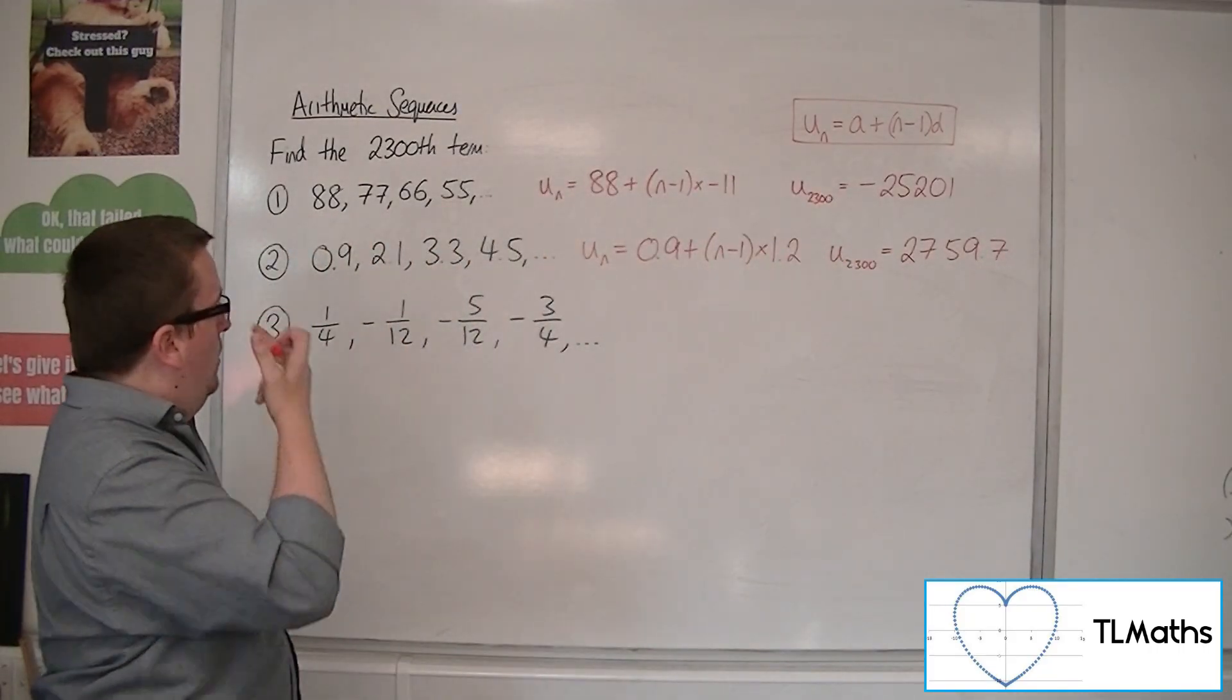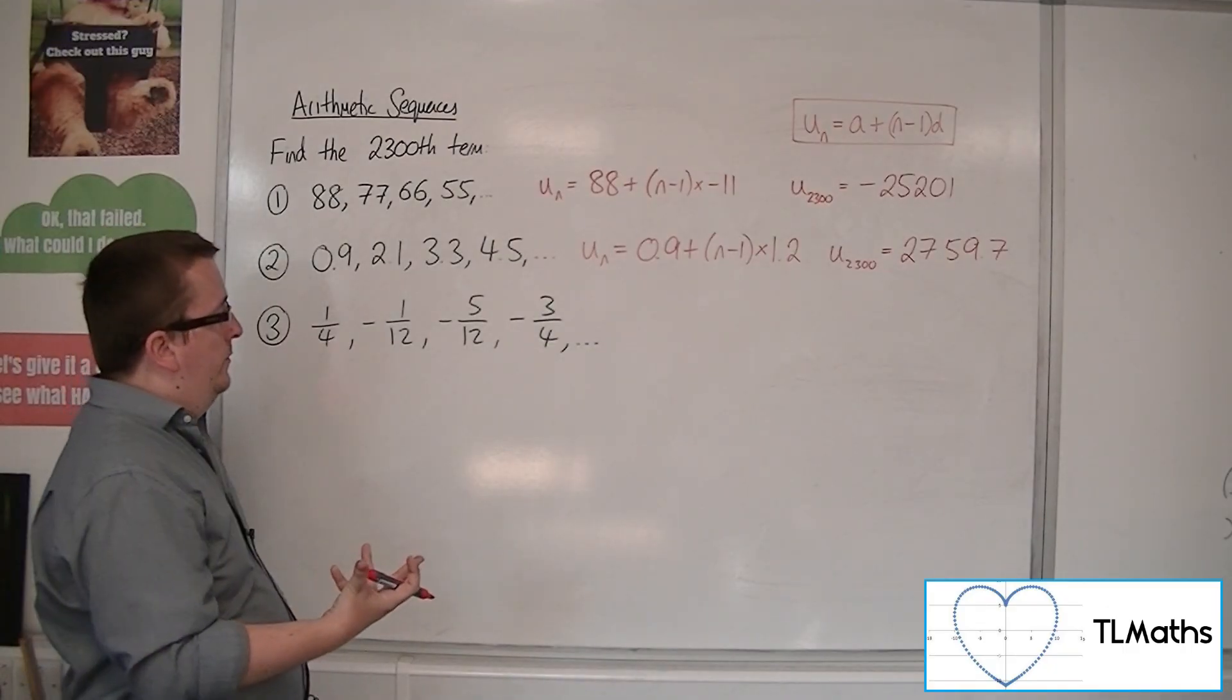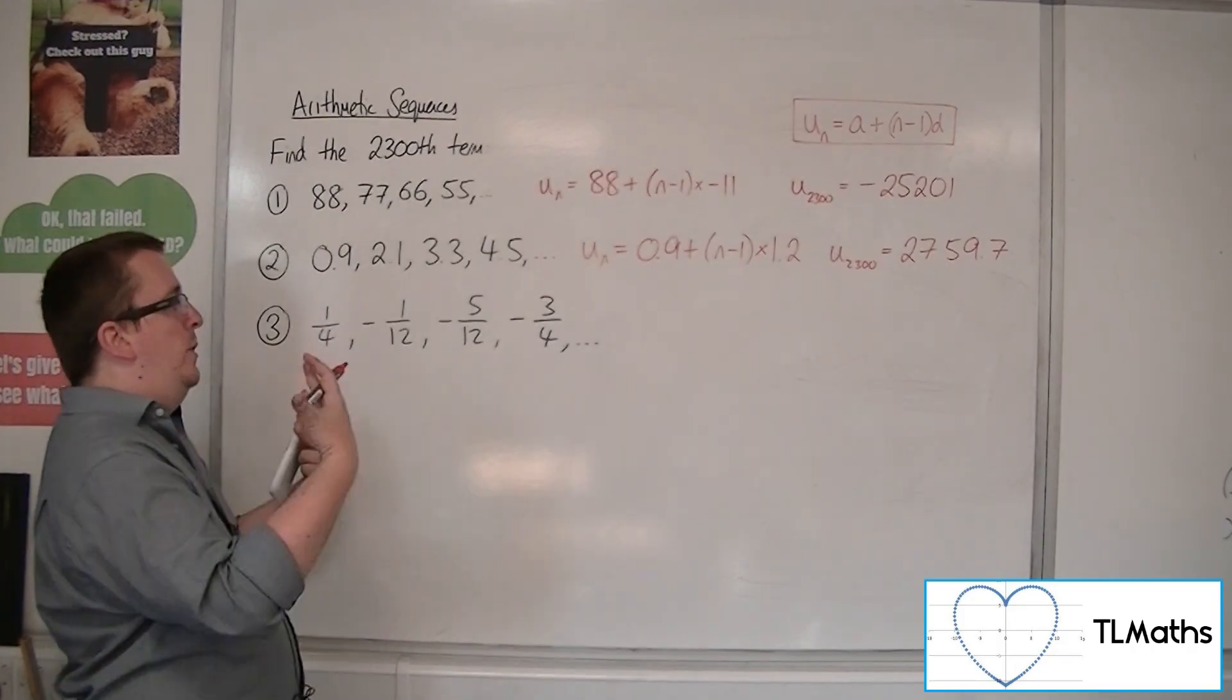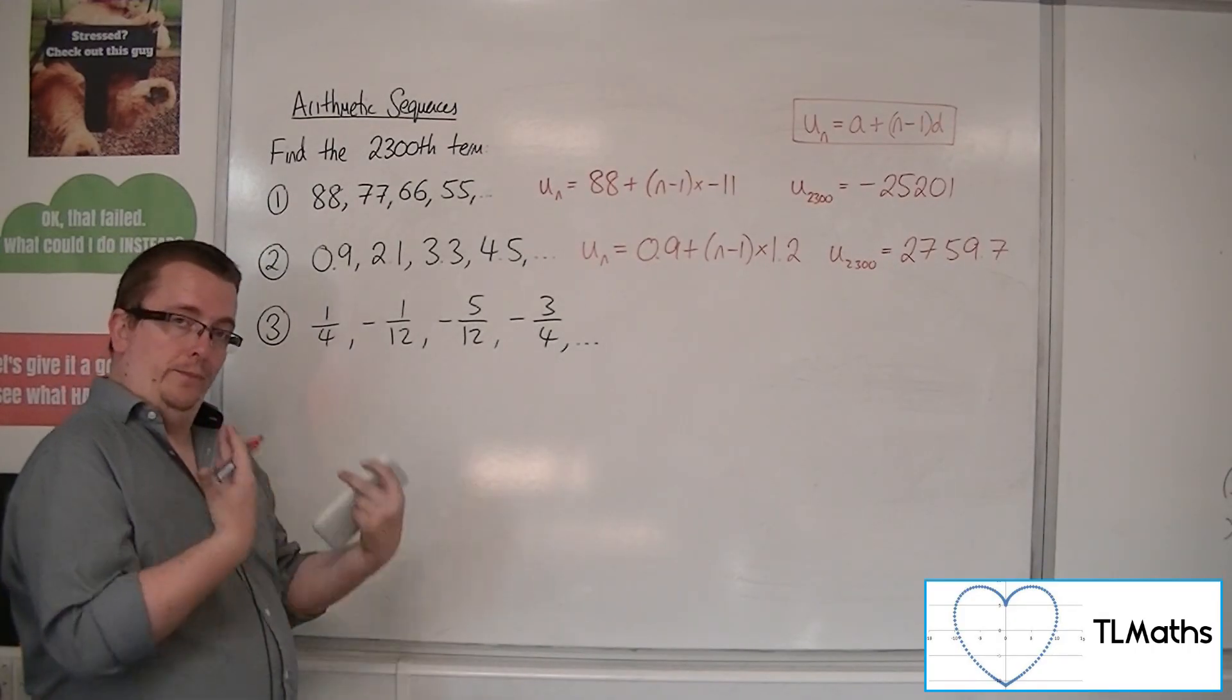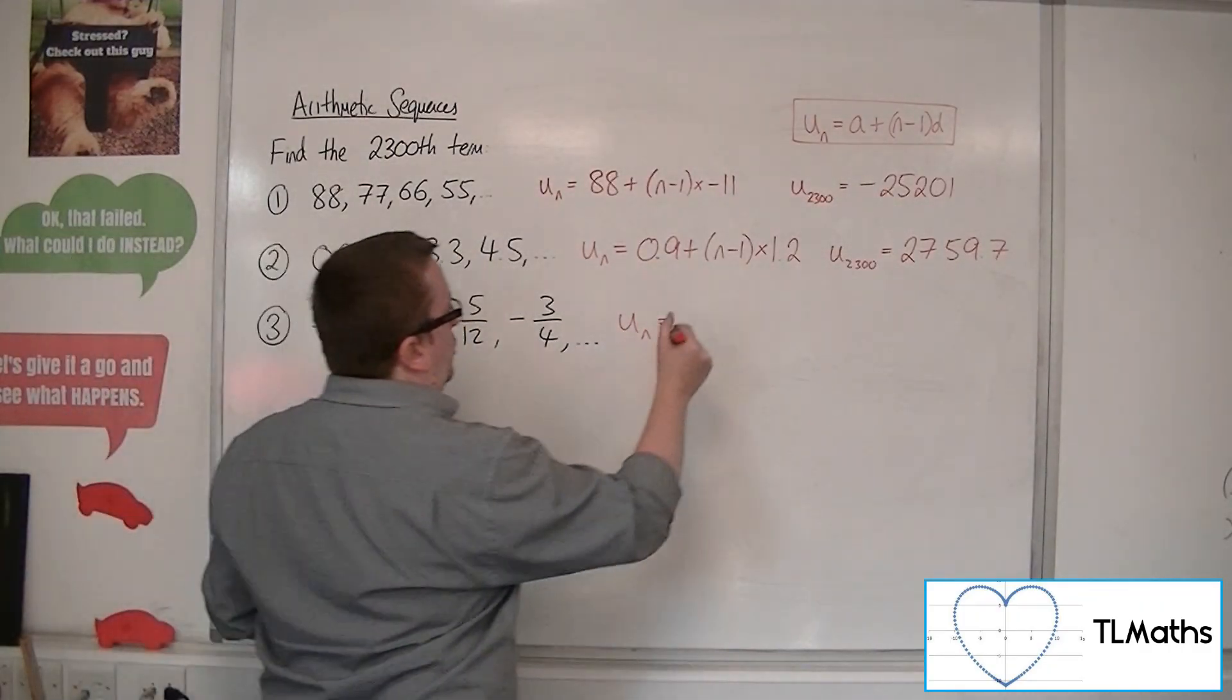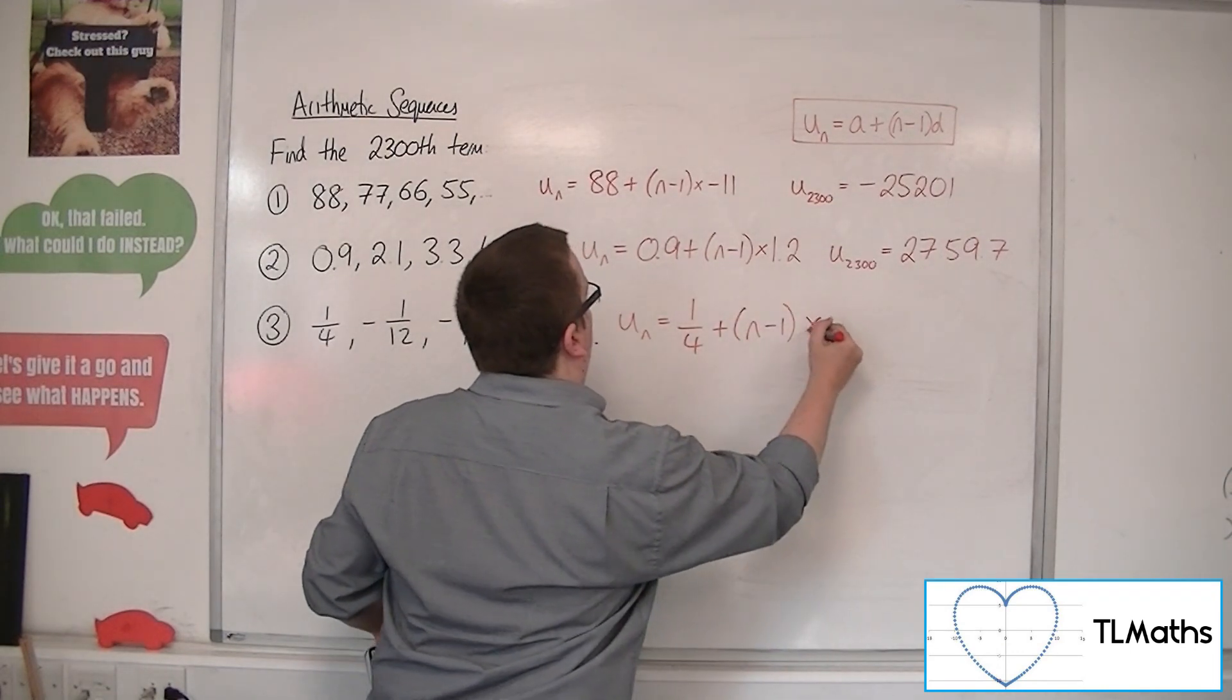And then number three: 1 quarter, minus 1 twelfth, minus 5 twelfths, minus 3 quarters. So the nth term is the first term, a quarter, plus n minus 1 times d.